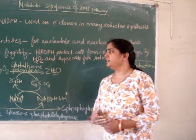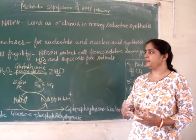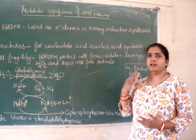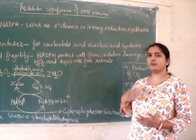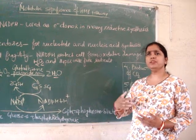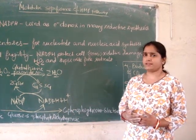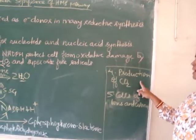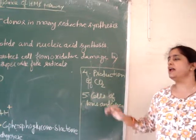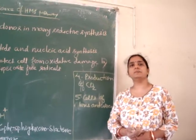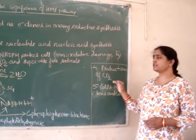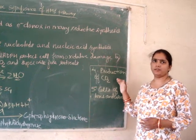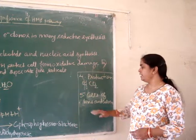Red blood cells will be unable to remove hydrogen peroxide, which will cause peroxidation of the membrane and hemolysis of the red blood cells. Another metabolic significance is that through the PP pathway, carbon dioxide is produced, which is very beneficial for plant cells — they can fix this carbon dioxide through carbon dioxide fixation reactions and convert it into sugars.